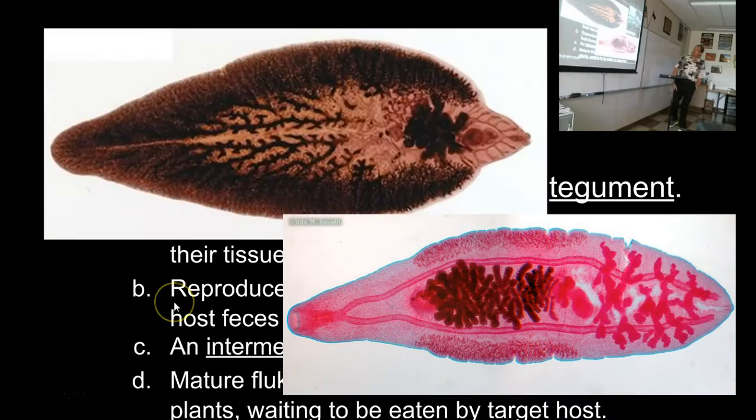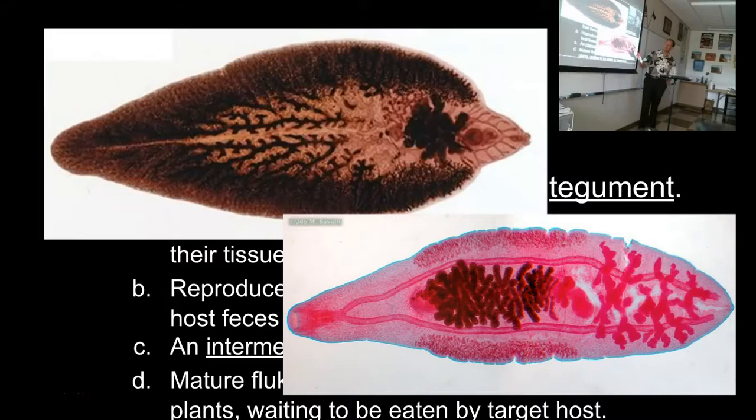This is what a fluke looks like — like pressed pennies. Some of them have a bump where the head is; sometimes the head is just part of the curvature of the body. Some really cool things about these flatworms: they have a head, but the mouth is not where the head is. The head is up here, but the mouth is actually right about in the middle of the body.